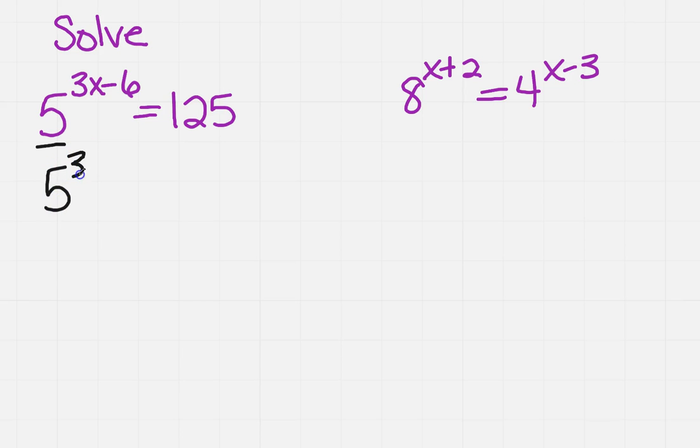So I'm going to rewrite the left-hand side. 5 to what power is 125? Well, 3 is. So now that the bases are the same, you see they both have a 5, those are your bases. Once those are the same, I can just set my exponents equal to one another.